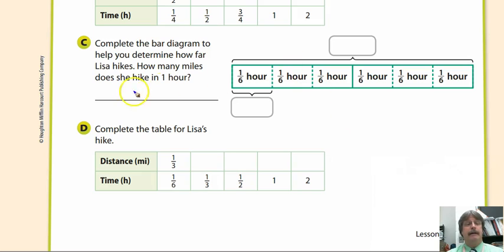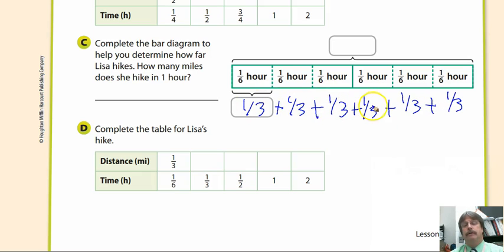This one down here is for Lisa. She's going to hike one third mile every one sixth hour. We're going to do the same thing. Put one third, one third, one third. We're going to add all those together. One, two, three, four, five, six. So we have six thirds. That is going to be two. So this is two thirds, three thirds, four thirds.